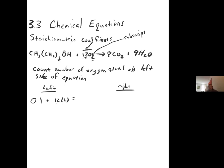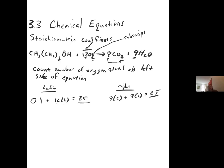On the right side: one substance has coefficient 2, subscript 8, giving 16 oxygens. Another has coefficient 9 and no subscript — no subscript means 1 — so 9 × 1 = 9 oxygens. Total on the right: 16 + 9 = 25. Both sides equal 25, so the equation is balanced. When both sides match, the equation is balanced — like a seesaw with equal mass on both sides.